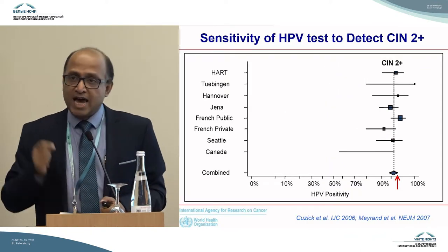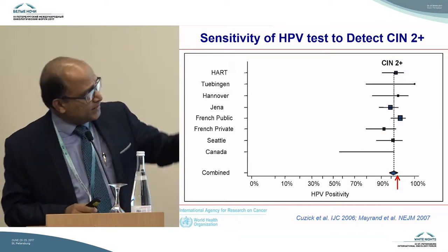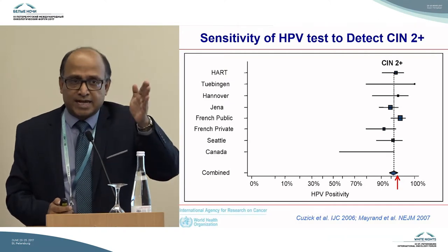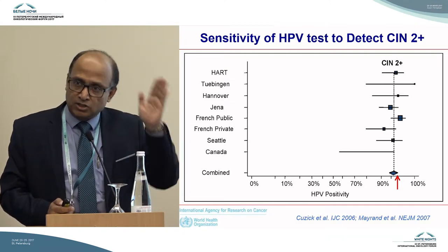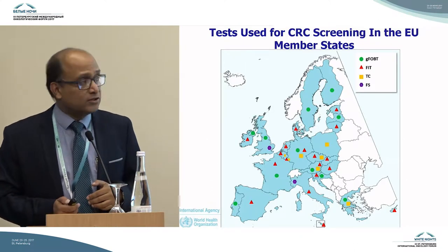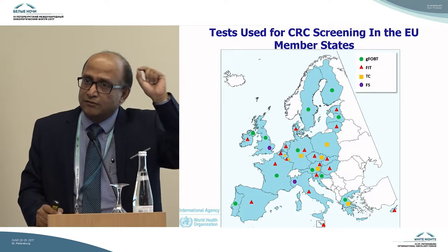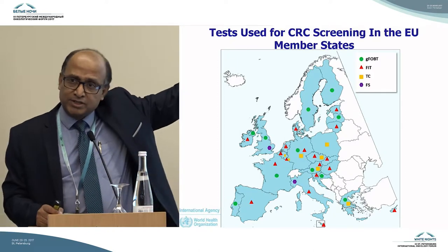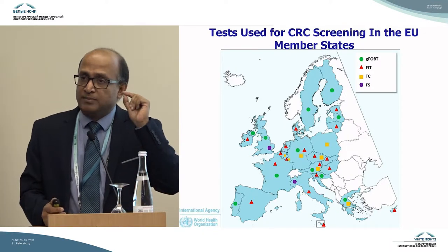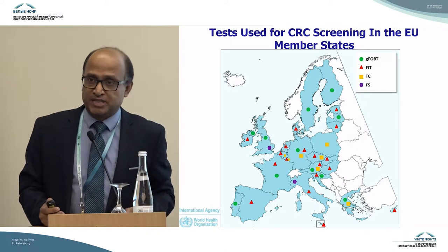That is why we have the new test: high-risk human papillomavirus detection, which has very consistently shown in many studies that its sensitivity is much better than cytology — around 90% sensitivity. The specificity is not yet ideal, but it has a lot of advantages. For colorectal cancer screening, we now have a range of tests. In European Union countries, some are doing the fecal occult blood test, which is probably the most doable and cheapest test at present, but it has to be repeated every two years.